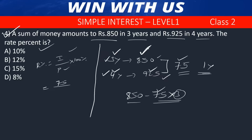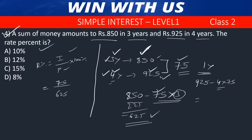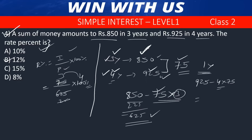Principal = 850 minus 225 = 625. Rate = 75 divided by 625 into 100 = 12 percent. The answer is 12%. The method is: rate percentage = (1-year interest / principal) × 100%, where interest per annum means per year.